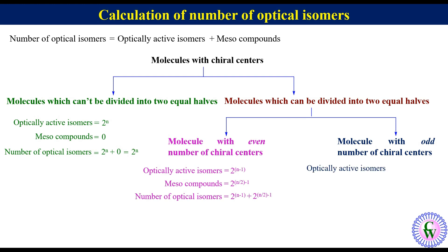For molecules with an odd number of chiral centers, the number of meso compounds is equal to 2 raised to the power (n minus 1)/2. So in this case, the total number of optical isomers will be equal to 2 raised to the power n minus 1.